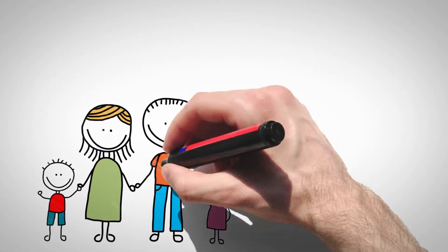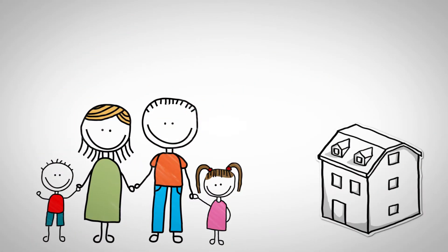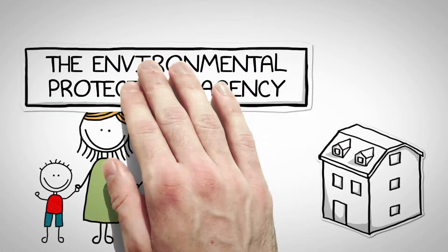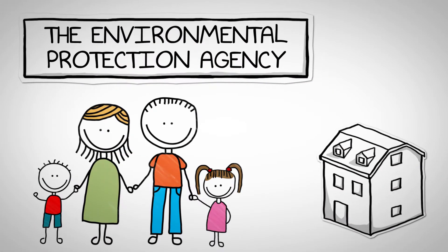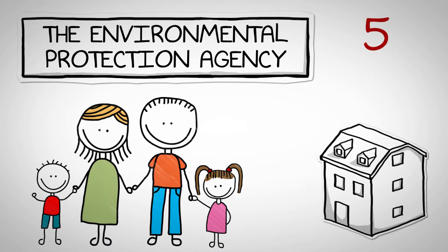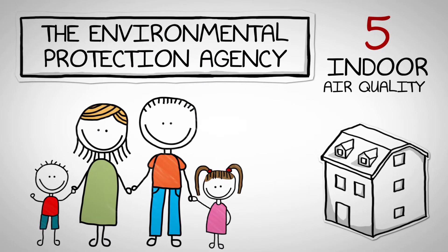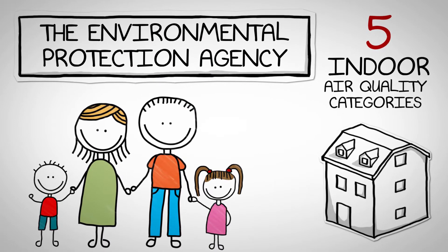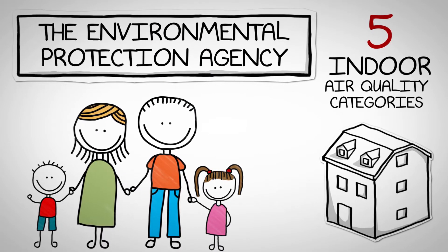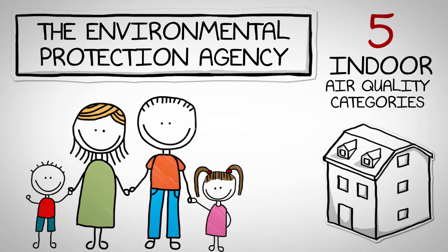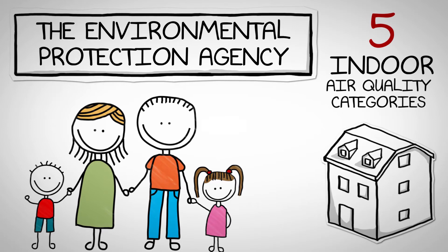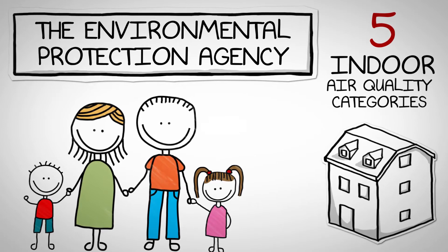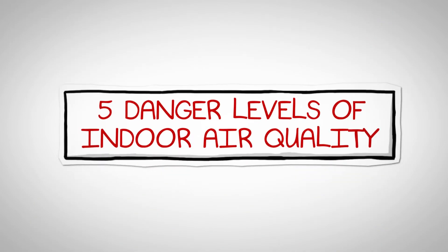When it comes to assessing a family's indoor living environment, the Environmental Protection Agency identified five indoor air quality categories of concern that all homeowners need to be educated about in their home. They are referred to as the five danger levels of indoor air quality.